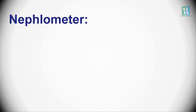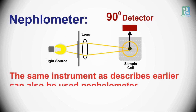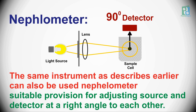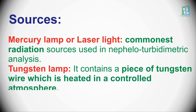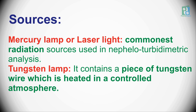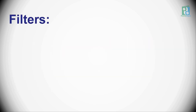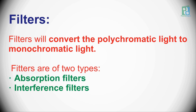In a Nephelometer, the same instrument as described above can also be used. However, in this case the instrument should have a suitable provision for adjusting the source and detector at a right angle to each other. Mercury arc lamp or laser light are some of the commonest radiation sources used in Nephelometer analysis. Tungsten lamp, which contains a piece of tungsten wire heated in a controlled atmosphere, is also used. The filters will convert polychromatic light to monochromatic light, and generally filters are used for this purpose.